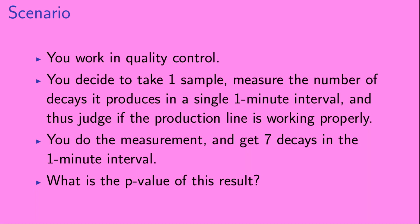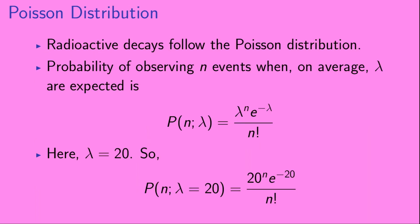Here's our question: what's the p-value of this result? Radioactive decays follow the Poisson distribution. This means that the probability of observing n events when on average lambda are expected is given by p(n|λ) = λ^n · e^(−λ) / n!. In our example, lambda is equal to 20, so the probability to observe n decays is equal to 20^n · e^(−20) / n!.